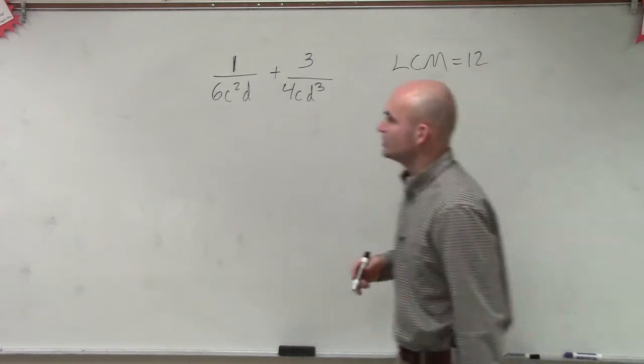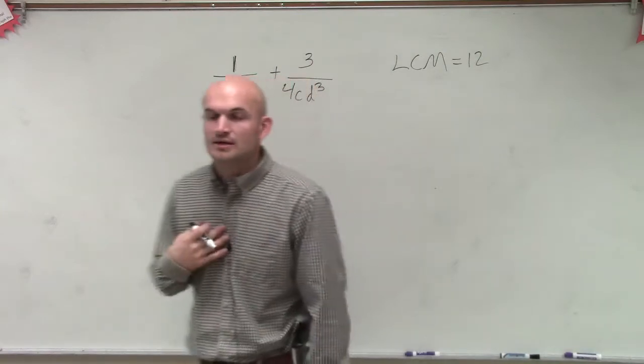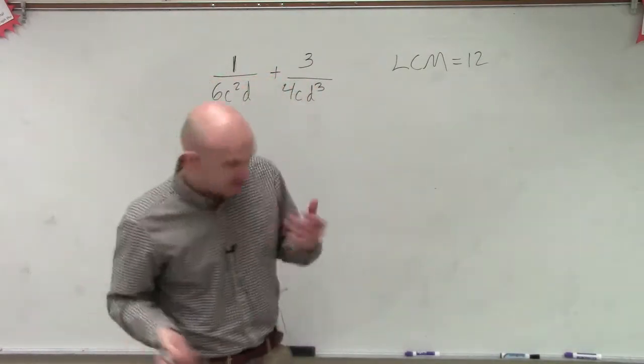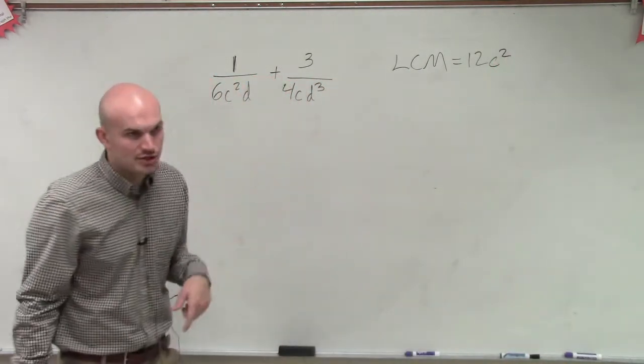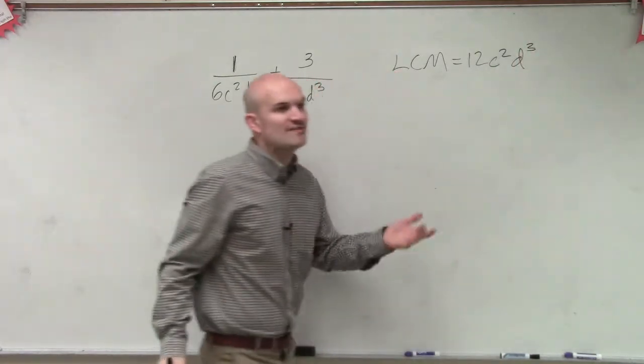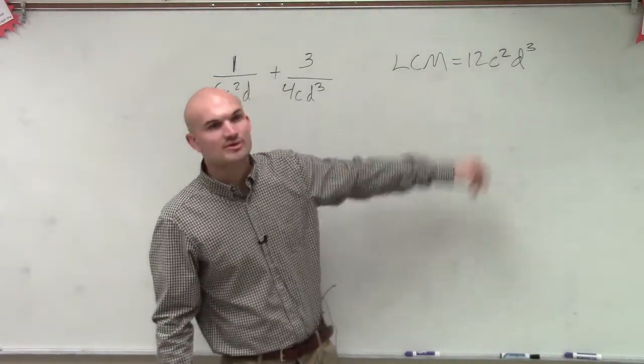OK, now let's look at the variable c. Between c² and c, what is the smallest value of c that they both divide into? c², right? And then the LCM for d and d³ is just going to be d³. That's the smallest value that both of my variables will divide into, as well as the same thing with my numbers.